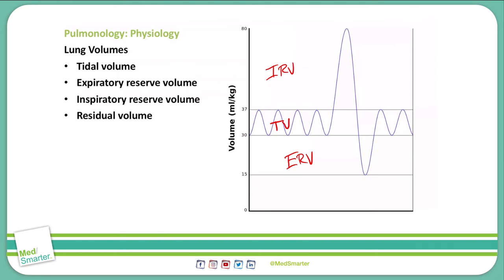The residual volume is the air that remains in your lung after you have done your maximum expiration and gotten out all the air that you can, seen here. We cannot measure all of the residual volume because there is air that cannot be measured by spirometry.